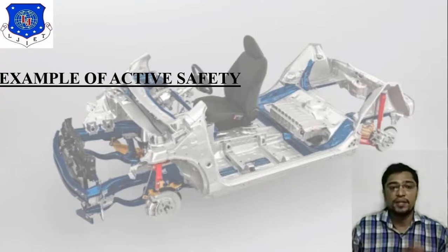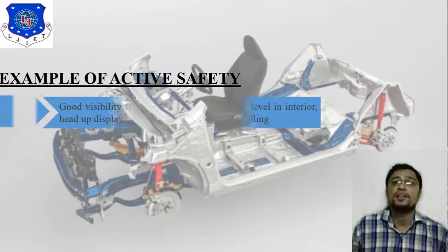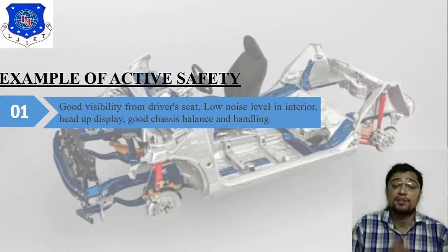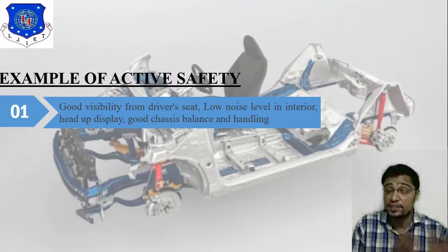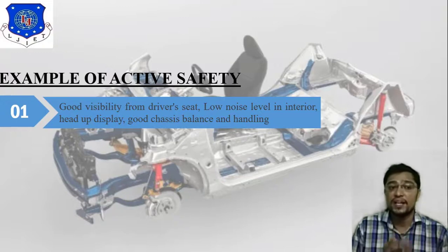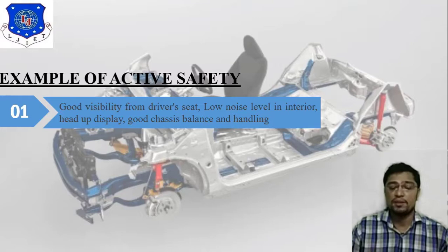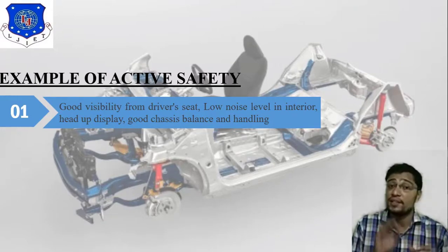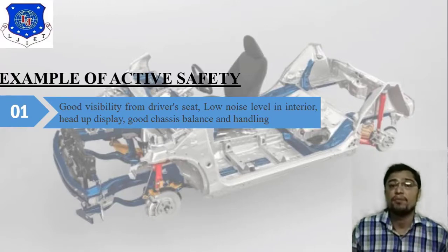There are many examples of active safety — I have attached six or seven examples. First and important: good visibility from the driver's seat, as vision is a key factor. Second: low noise level in the interior. Third: head-up display. Fourth: good chassis balance and handling, since vibration and friction are very important parameters.